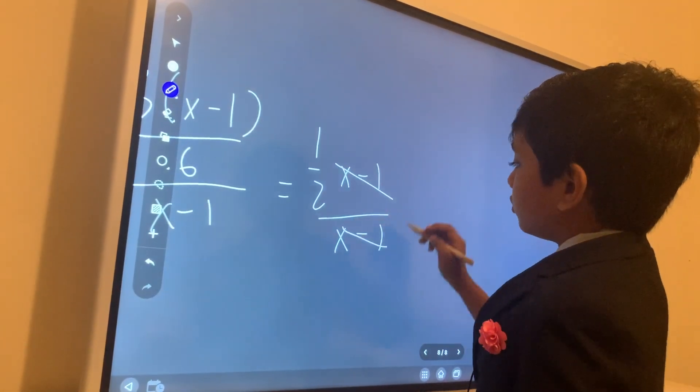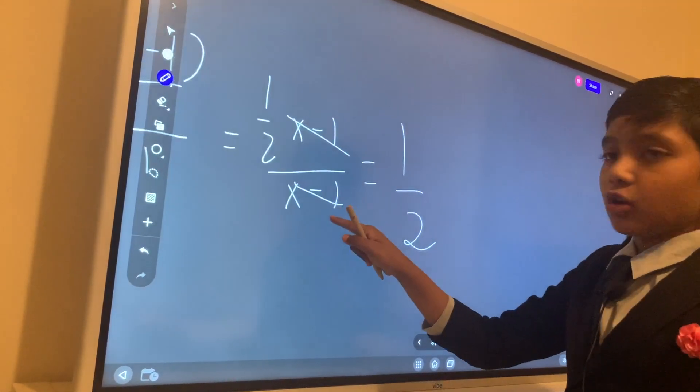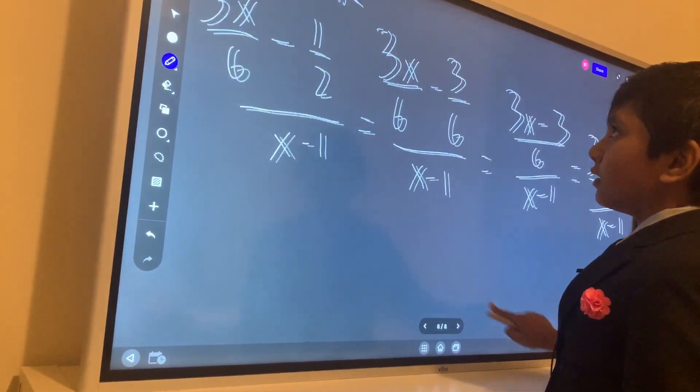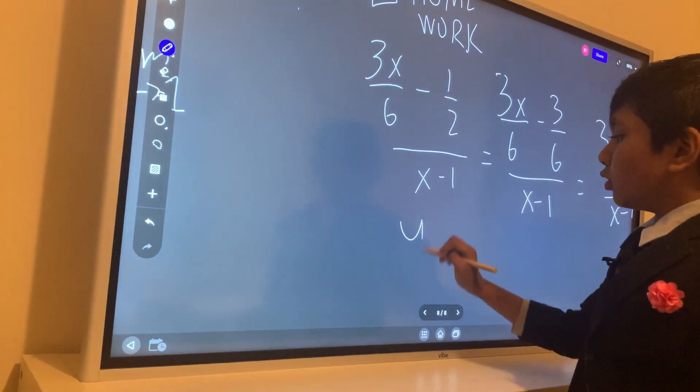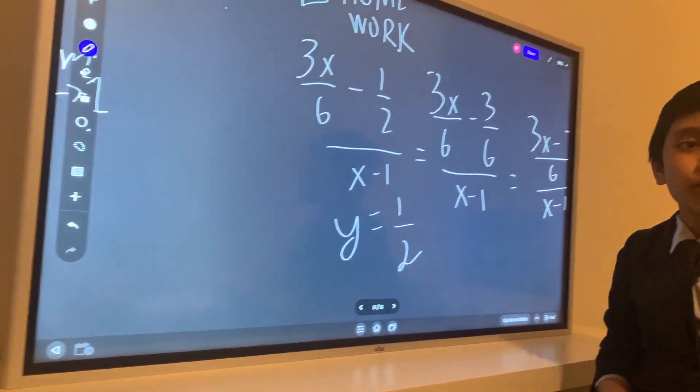Now, these two cancel out, giving us 1 half. And since there are no numbers in it, then this is actually officially equal to y equals 1 half. x has no control over it.